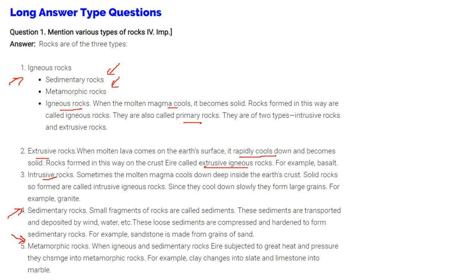When we talk about intrusive rocks, sometimes the molten magma cools down deep inside the earth's crust. Solid rocks are formed. These are called intrusive igneous rocks. Since they cool down slowly, here it cools down rapidly, here it cools down slowly. They form large grains. For instance, granite.